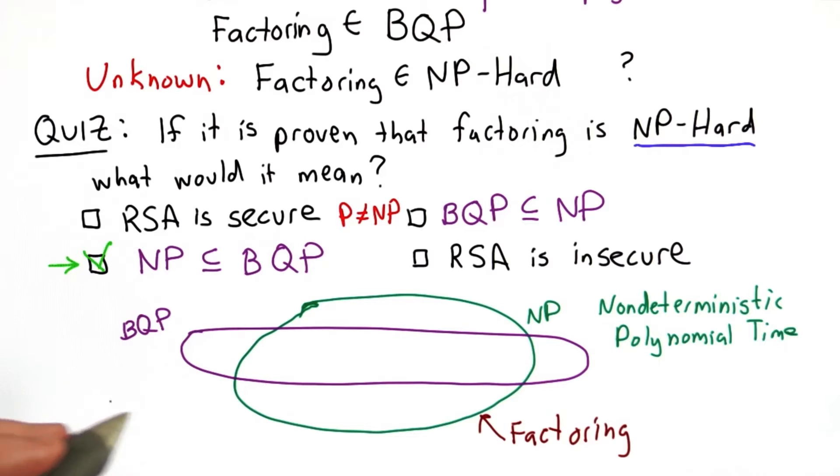And the reason we know factoring is in NP is we have solutions that solve it in non-deterministic polynomial time. Even the brute force solution, if we could execute all those paths at once, would solve it in polynomial time.